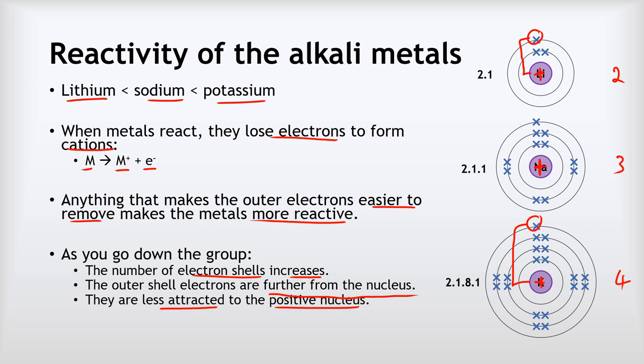And so, therefore, the further away the electrons are from that positive nucleus, the less attracted they will be to it. So what that means is that they're going to be more easily removed from the atoms, and that will mean that the atoms will become more reactive as we go down the group.